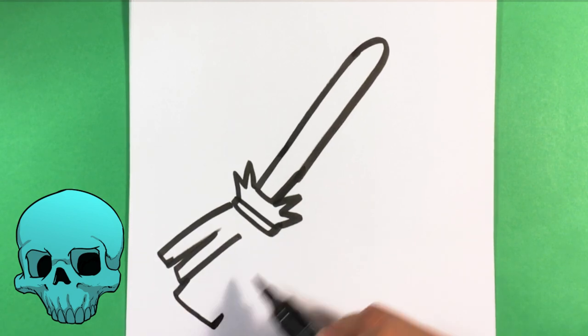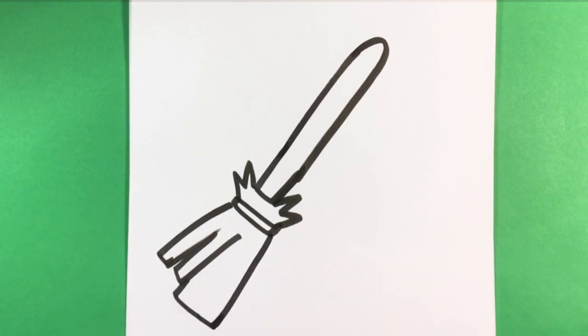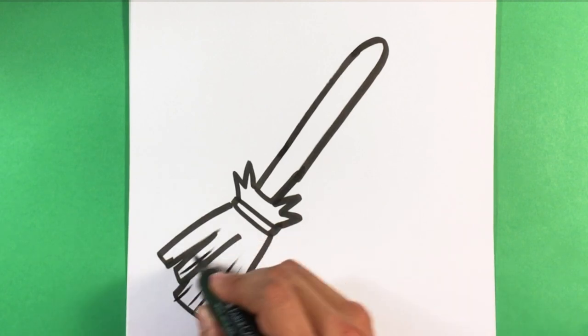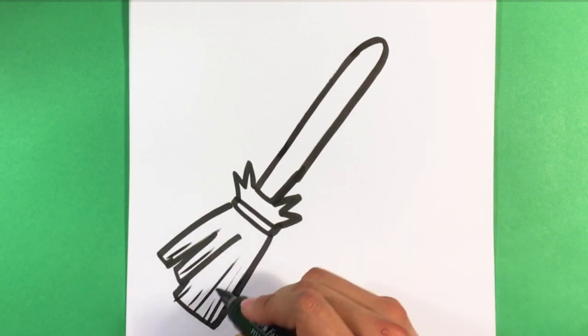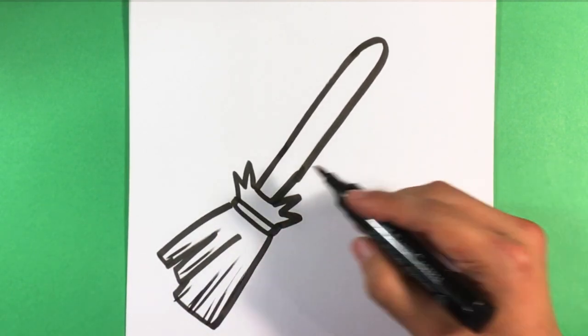And what you can do is draw some blocky shapes toward the bottom, and then divide them up. I was doing that there. And that's a very easy way to do a broom.